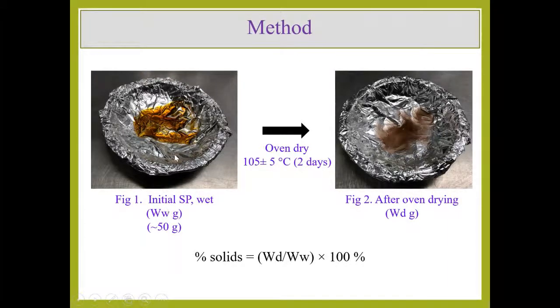A known quantity of plasticizer is taken in a steel plate, then it is evaporated using an oven at 105 plus or minus 5 degrees C for a period of 1 to 2 days. We evaporate the water, so what is left over is only the solid part and the weight of the solid part is denoted as Wd here. By considering the oven dry weight and the initial weight, we can determine the percentage solid.